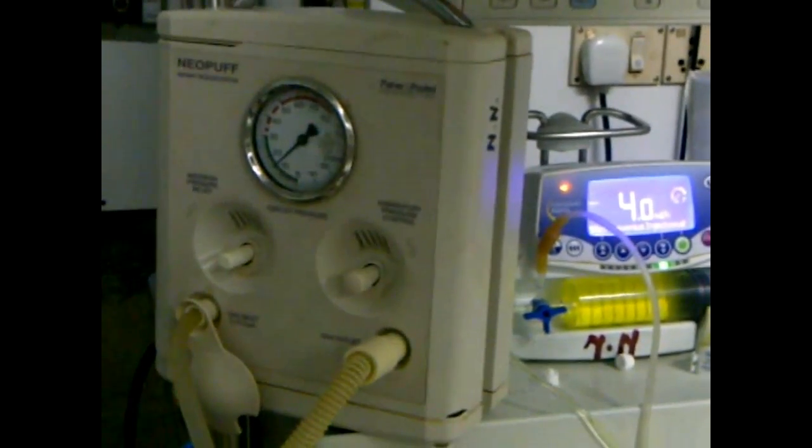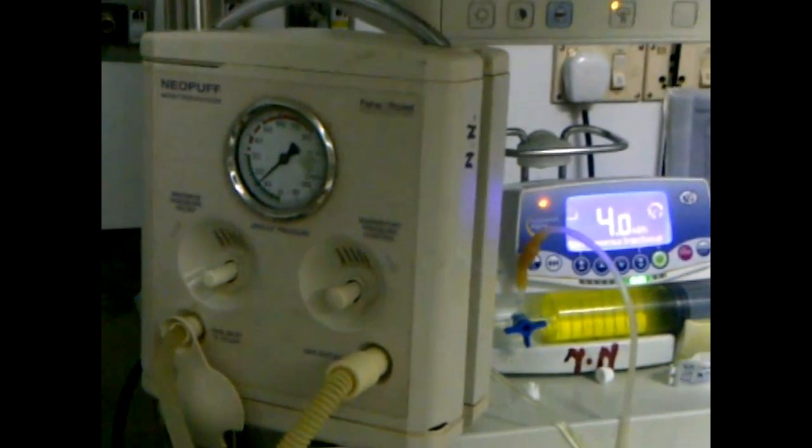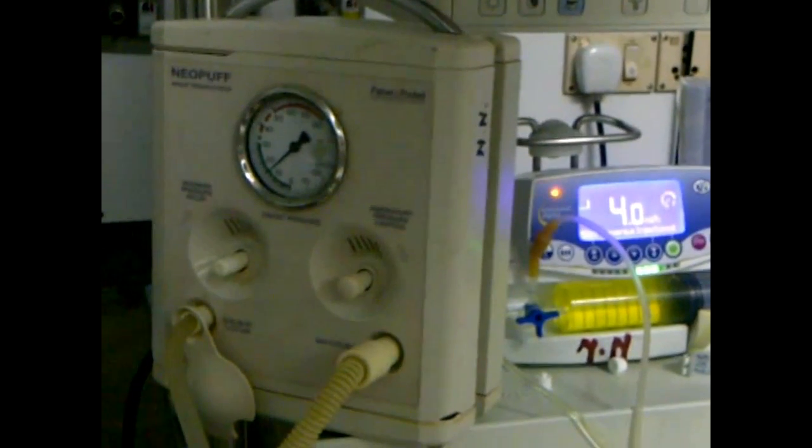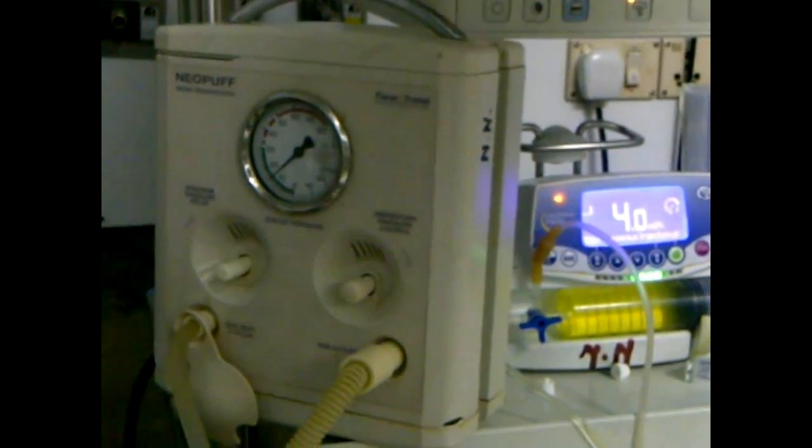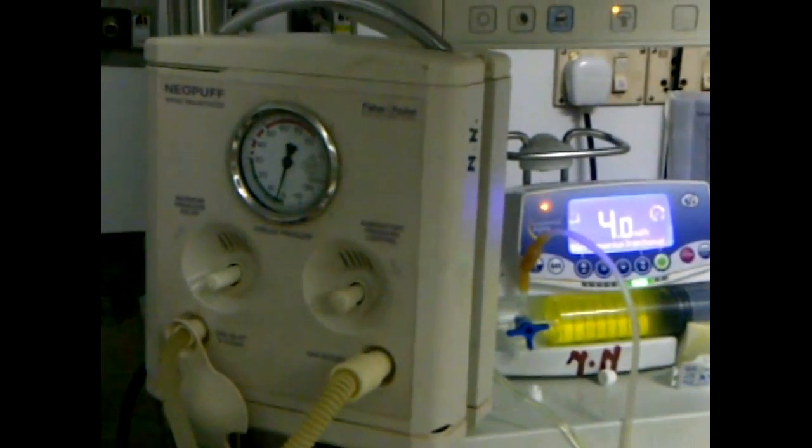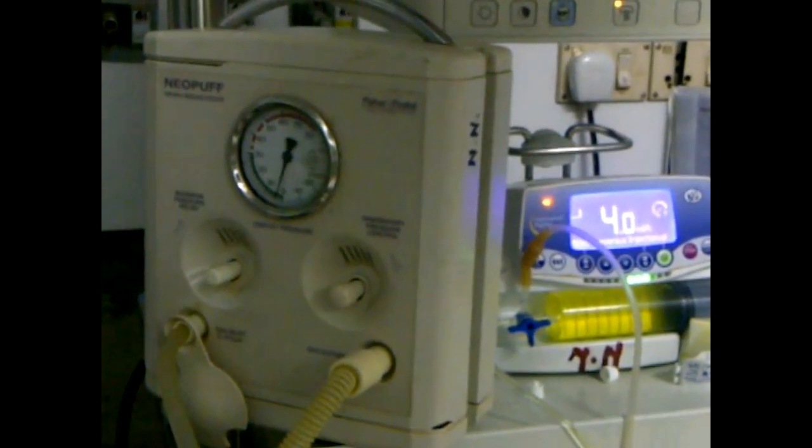Just above this you can see two knobs. On the left there is a knob which is used to set peak pressure, while on the right side there is a knob which is used to set the pressure for the pop-up valve. Here we set the peak pressure at 20 and the pop-up valve at 30.